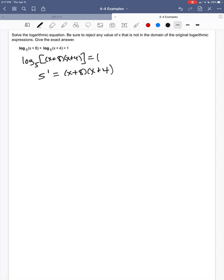Now x is inside these parentheses. I'm going to have to get rid of the parentheses by doing FOIL. So 5 to the first power is just 5. When I do FOIL, first I take x times x, so x times x is x squared. Outer, I'm going to take x times positive 4, so that's plus 4x. Inner, I'm going to take positive 8 times x, so that's plus 8x. And then last, positive 8 times positive 4 will give me positive 32.